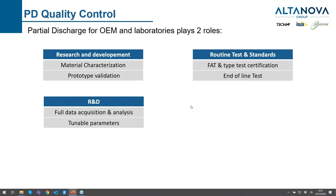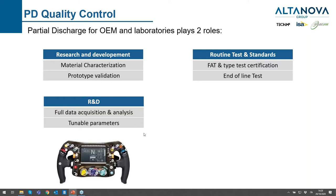For R&D, it is important to have all the possible data to be studied because I want to analyze all the possible characteristics of the prototypes or the material I am studying. I want a lot of information and tunable parameters — I want to change the triggers, the time of the test, the timeline, time saving, and so on. I need something much more tunable and powerful than what I need for a routine test.